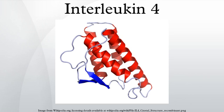IL-4 has a compact, globular fold stabilized by three disulfide bonds. One half of the structure is dominated by a 4-alpha helix bundle with a left-handed twist. The helices are anti-parallel, with two overhand connections, which fall into a two-stranded anti-parallel beta sheet.